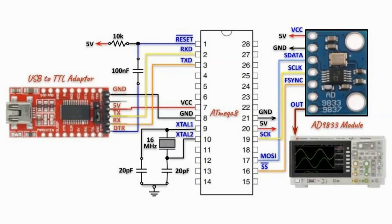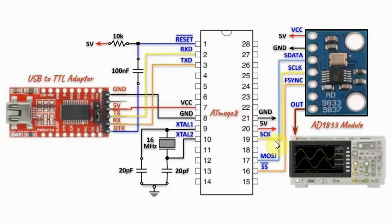This is a circuit diagram showing the interface of the AD9833 module with the ATmega8 microcontroller using an SPI connection. The serial data line from the module is connected to the master out-slave input line of the controller.